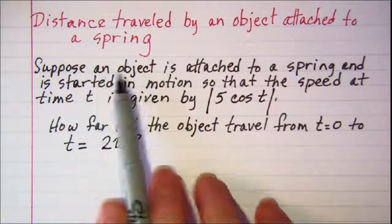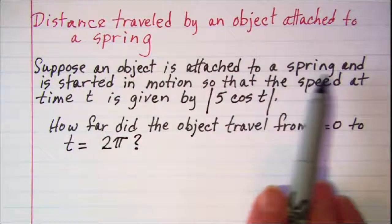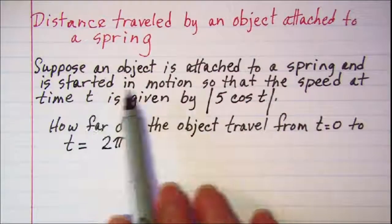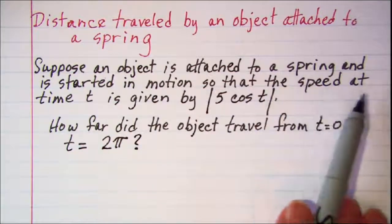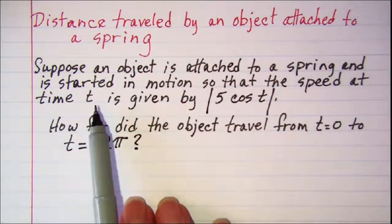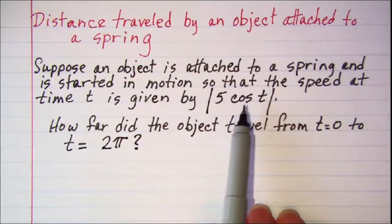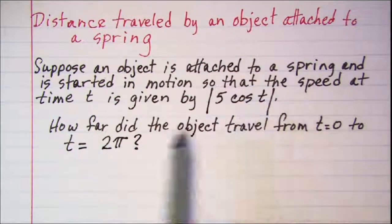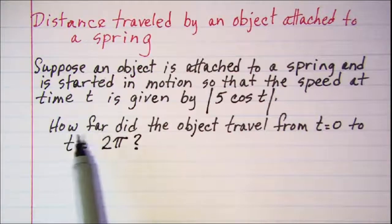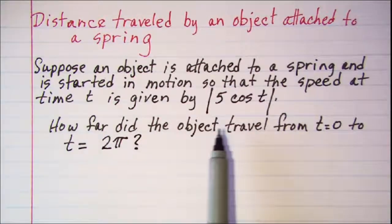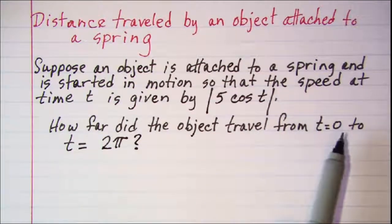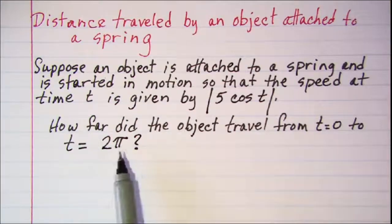Suppose an object is attached to a spring and is started in motion so that the speed at time t is given by the absolute value of 5 times the cosine t. Our question is how far did the object travel from t equals 0 to t equals 2 pi?